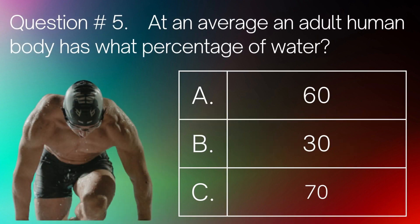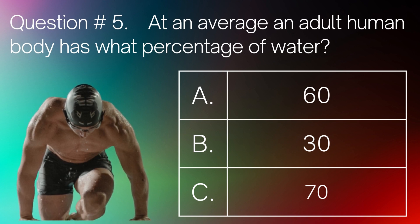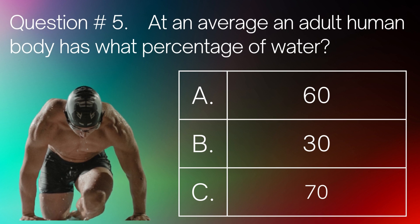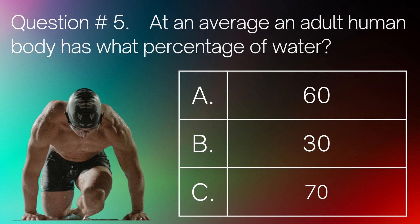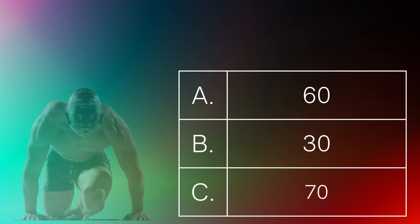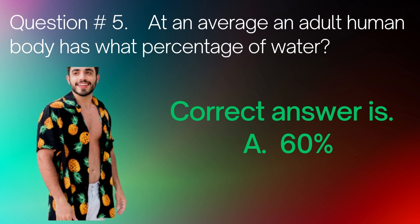Question number 5. At an average, an adult human body has what percentage of water? A. 60. B. 30. C. 70. Correct answer is 60%.